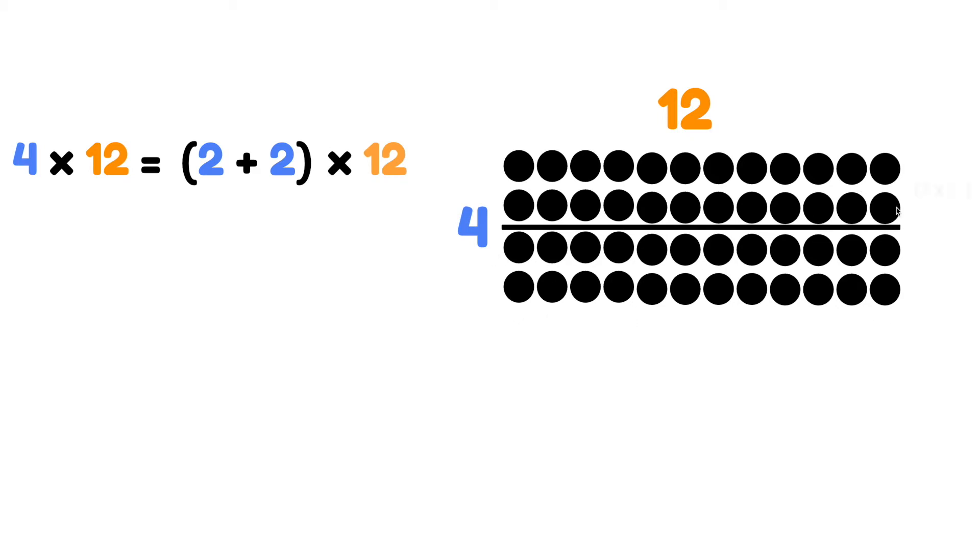That means that we have 2 rows of 12 on top and 2 rows of 12 below. That's because we distributed the 12 to the 2 rows on top and distributed the 12 to the 2 rows below.